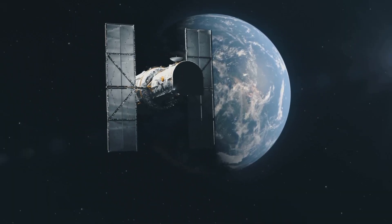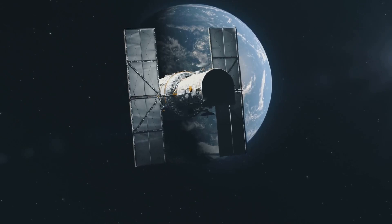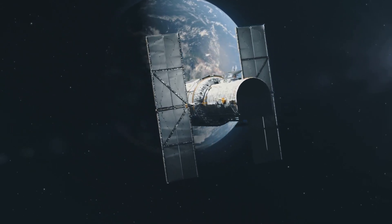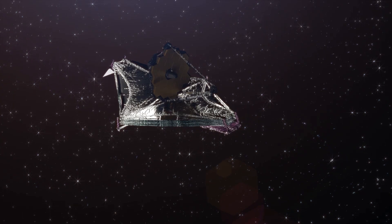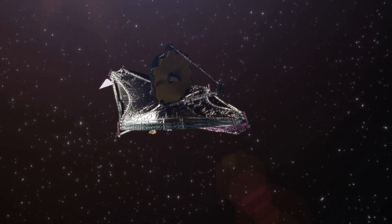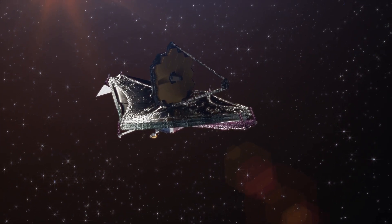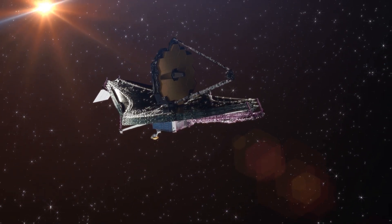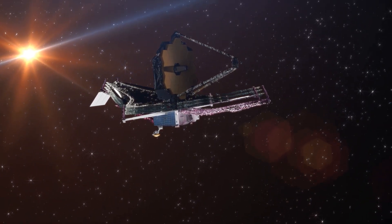Another distinguishing feature of the JWST is its location. It operates in a solar orbit near the Sun-Earth L2 Lagrange point, about one and a half million kilometers from Earth. This remote location allows the telescope to have a clear, unobstructed view of the cosmos, free from the Earth's atmospheric interference.